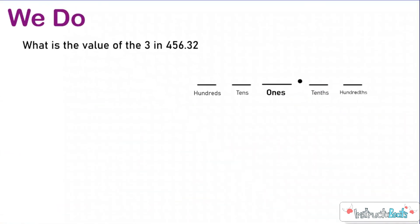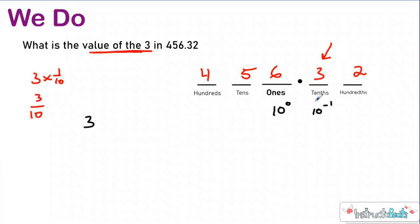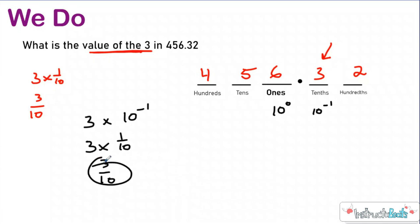Let's take a look at this we-do problem. This one should be in your notes. Here I have four hundreds, five tens, six ones, three tenths, and two hundredths. I want to know: what is the value of the three? I have three groups of a tenth — three groups of one tenth — which means that value is three tenths. Looking at it the long way, this would be the first position to the right of the ones place, which is why it's a negative one. So you multiply the digit by a factor of 10 to the negative first power, which is just one tenth, giving me three tenths. Either way I come up with the same answer.